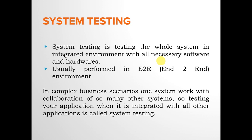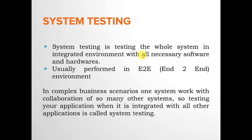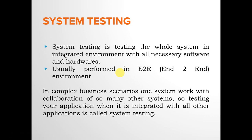System testing is performed after functional testing to verify that the whole system is working correctly. It involves testing the entire system in an integrated environment with all necessary software and hardware, and is usually performed in an end-to-end testing environment. For example, if three systems A, B, and C work together and you are testing system A, performing that test in collaboration with systems B and C is called system testing.